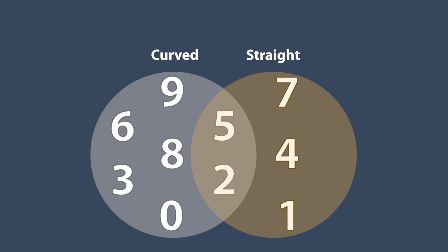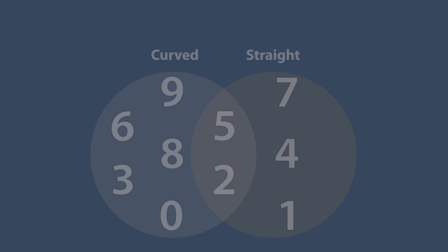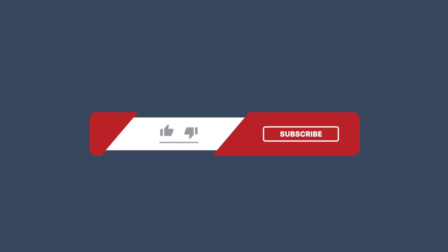So now you know how Venn Diagrams work. There are circles that overlap to show you how things are similar and how things are different. The similarities always go in the overlapping part. If you thought this video was helpful, please leave a like. For more videos like this, please subscribe.